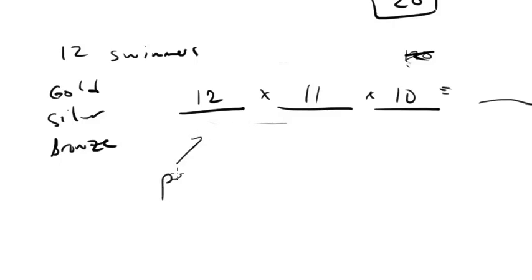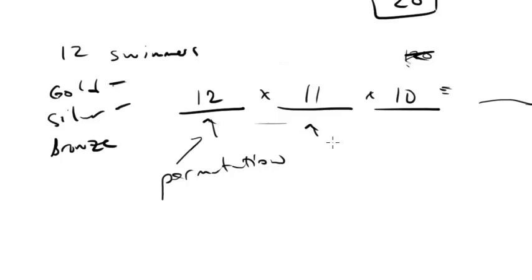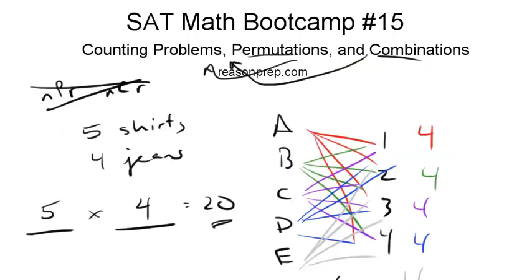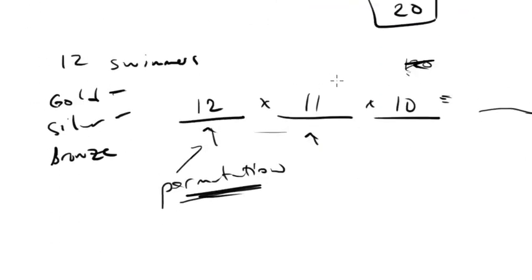This is just a permutation — finding the order of something where order does matter, because getting gold is different than getting silver. Being in one spot is different from being in another. So this is a permutation: an arrangement of things where order matters. Notice, you don't really need to know it's a permutation — you can just use the line rule, draw out your lines, and you're done.